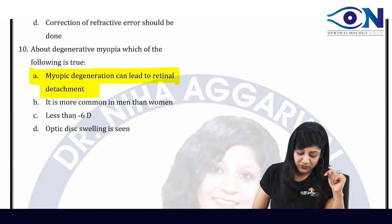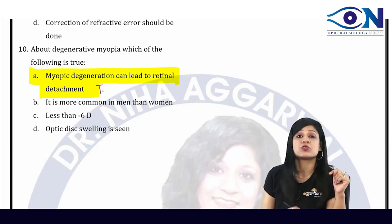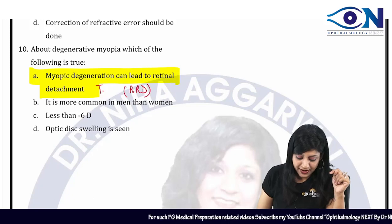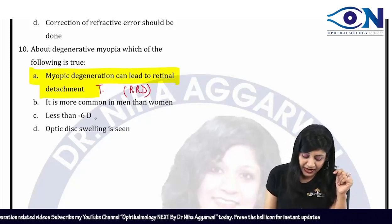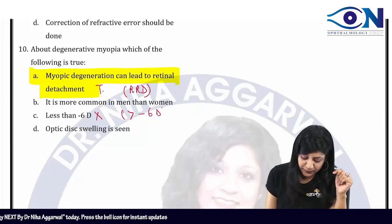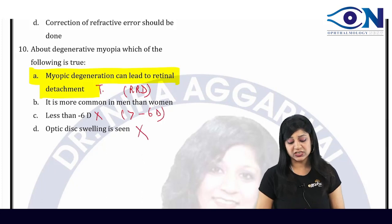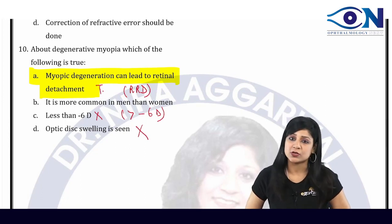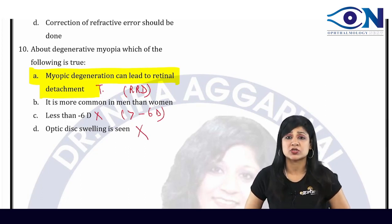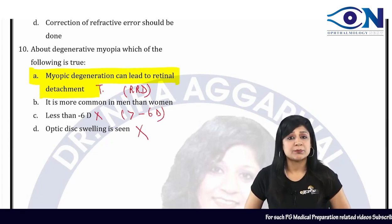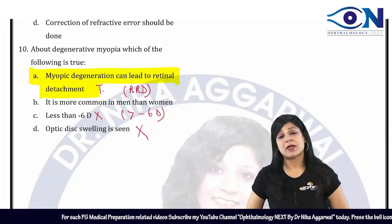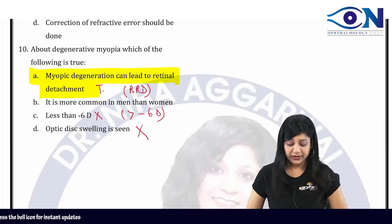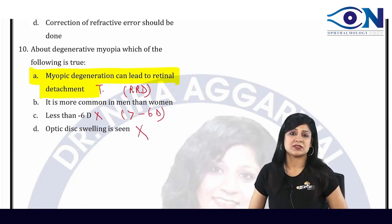Question 10: About degenerative myopia — myopic degeneration can lead to rhegmatogenous retinal detachment (true). It is not more common in men than women. It is more than minus 6 diopters, not less than minus 6 (so that option is wrong). There is no optic disc swelling in degenerative myopia. Pathological or high myopia is caused by overstretching of the eyeball, leading to Fuchs spots, lacquer cracks, posterior staphyloma, and increased risk of rhegmatogenous retinal detachment with vitreous degeneration and floaters.